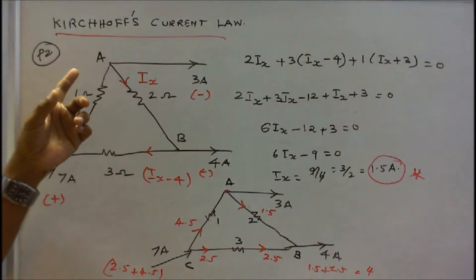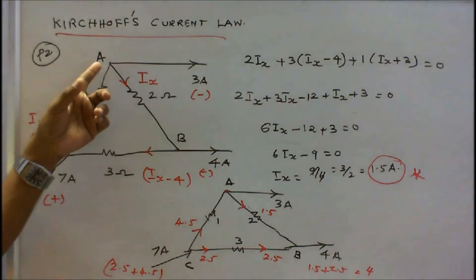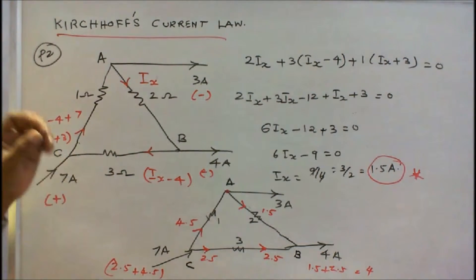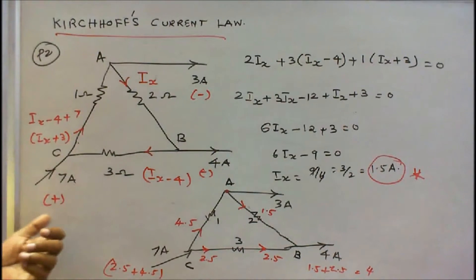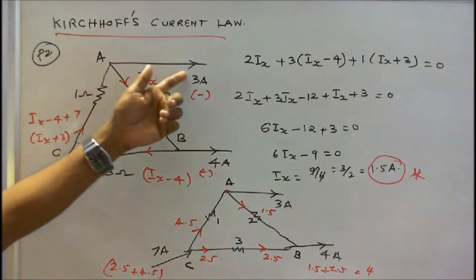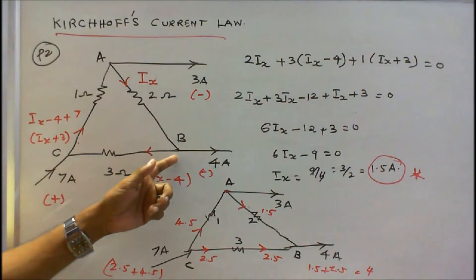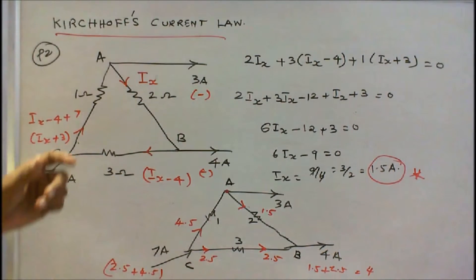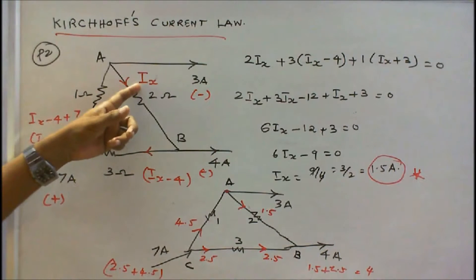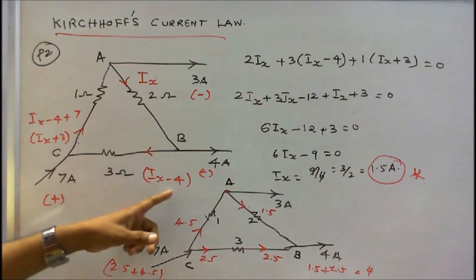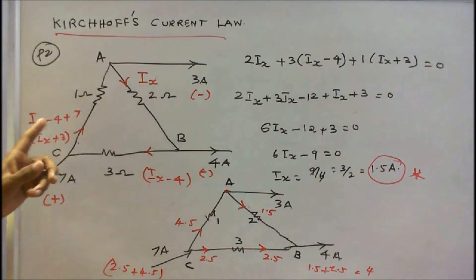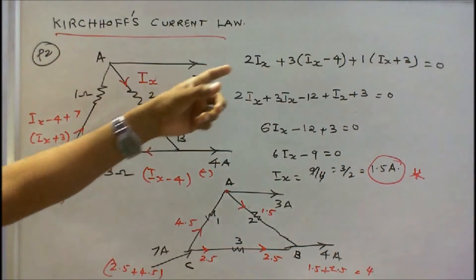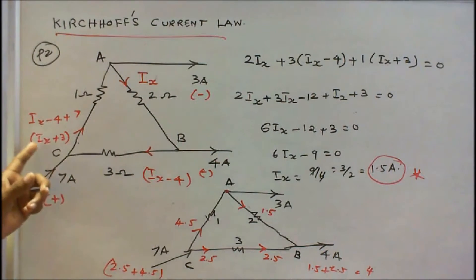Problem number 2. In this figure, there are three junctions A, B, C, and three resistors: 2 ohm, 3 ohm, 1 ohm connected as shown. Current leaving the junction is negative; current towards the junction is positive. At junction A, 3A is leaving — that is minus. At junction B, 4A is leaving — that is minus. At junction C, 7A is towards the junction — positive. Let current through the 2 ohm resistor be Ix. Current through the 3 ohm resistor is Ix minus 4. Current through the 1 ohm resistor is Ix minus 4 plus 7, equal to Ix plus 3.